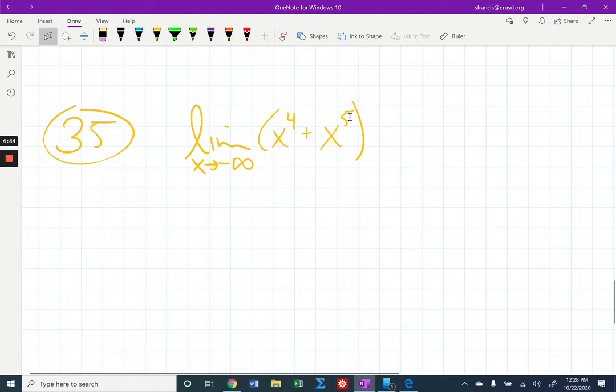And you should know that if your highest power of x is an odd power, and the coefficient on that is positive like this one is, then the ends are going to look like this. The right end is going to go to positive infinity, and the left end is going to go to negative infinity. And so that's what's happening here in this example.